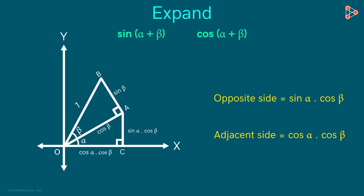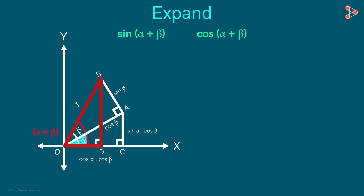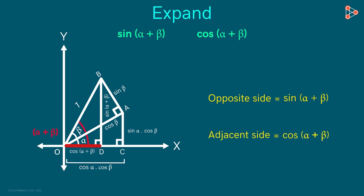Remember, we want to find sin alpha plus beta and cos alpha plus beta. Notice this angle here — its measure is alpha plus beta. If we drop a perpendicular from this point, we get a right triangle with this angle as alpha plus beta. The opposite side for this triangle is sin alpha plus beta, and the adjacent side is cos alpha plus beta.